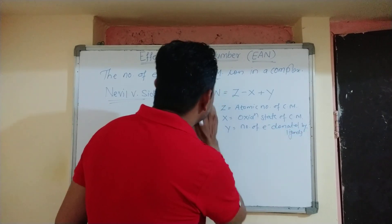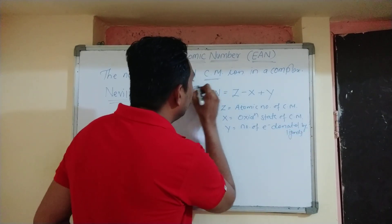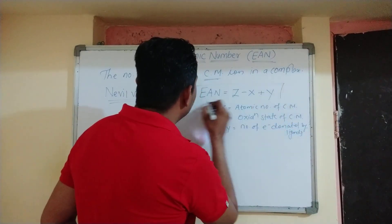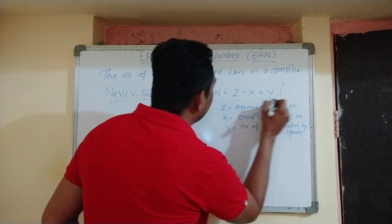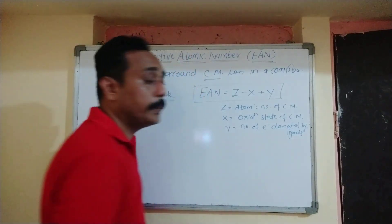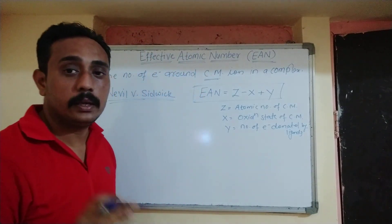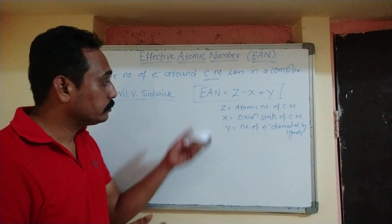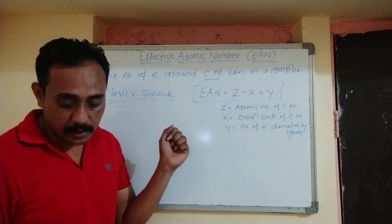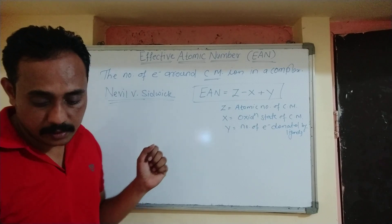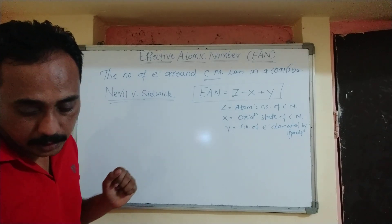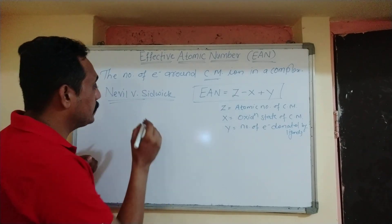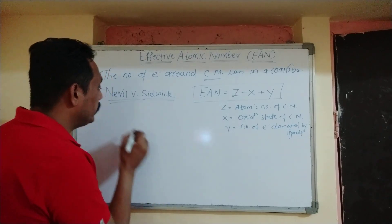This is the formula through which we can calculate the Effective Atomic Number. Let us take one example. The first example is [Fe(CN)₆]⁴⁻.